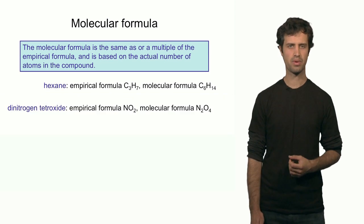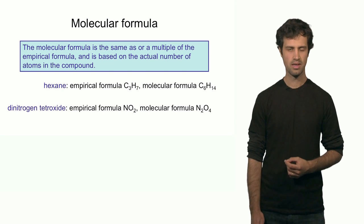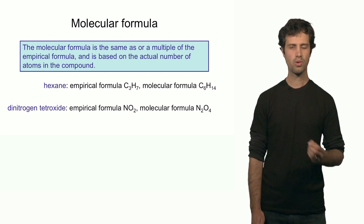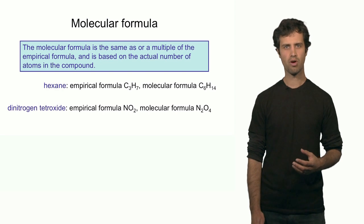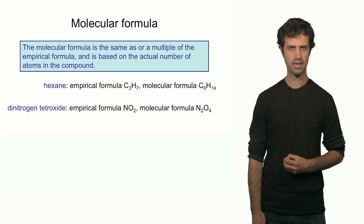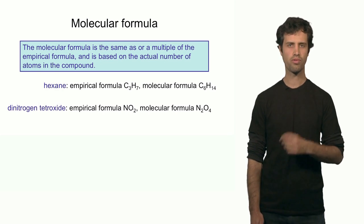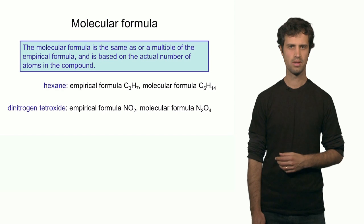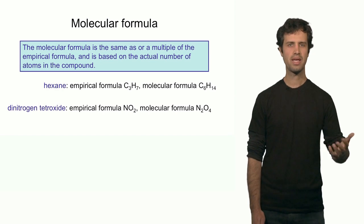Another example is dinitrogen tetraoxide. The empirical formula is NO2. The actual molecular formula is twice the empirical formula — it is 2 times NO2, which is N2O4. This multiplier, in this case 2, can be any integer number.